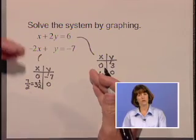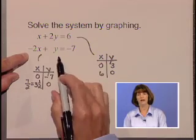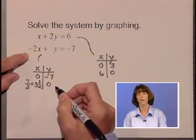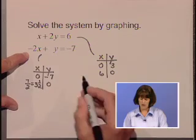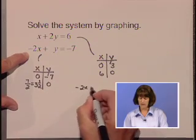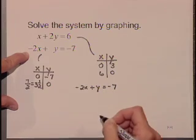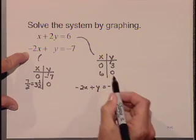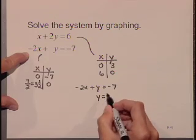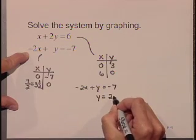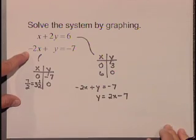Now, it may bother some to work with those fractions, so if you would rather graph the second line using the slope intercept form, you're welcome to do that, and I'll show you that as well. To write this equation, negative 2x plus y is equal to negative 7 in slope intercept form, we simply move that negative 2x to the other side of the equation. y is equal to 2x minus 7 is its slope intercept form.